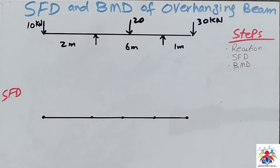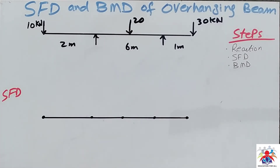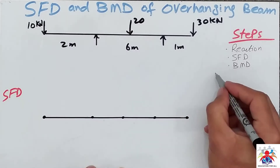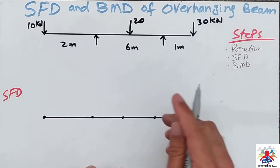Hello and welcome to my YouTube channel. In this video I am going to explain how to draw shear force and bending moment diagram of three point loads acting on an overhanging beam. We have three steps to follow: reactions, shear force diagram, and bending moment diagram. First of all we have to calculate reactions.